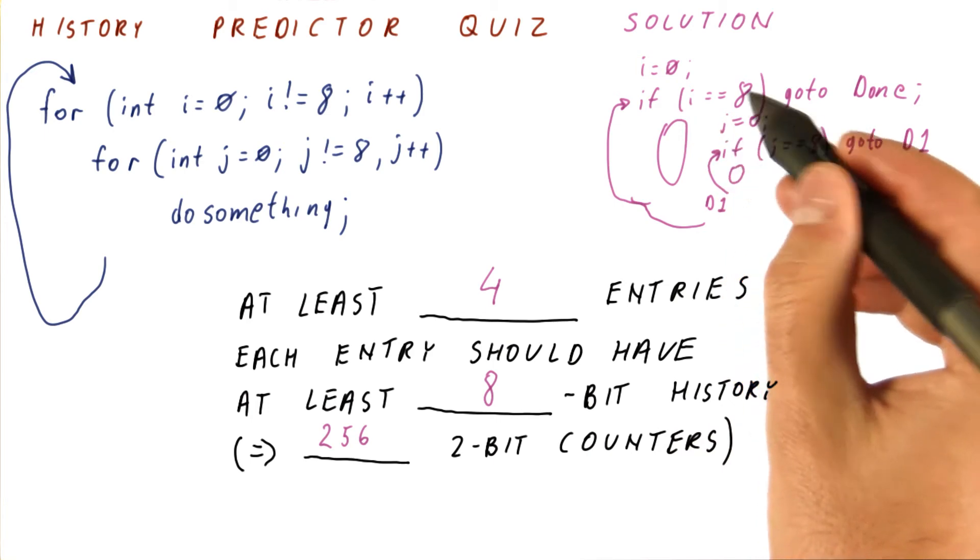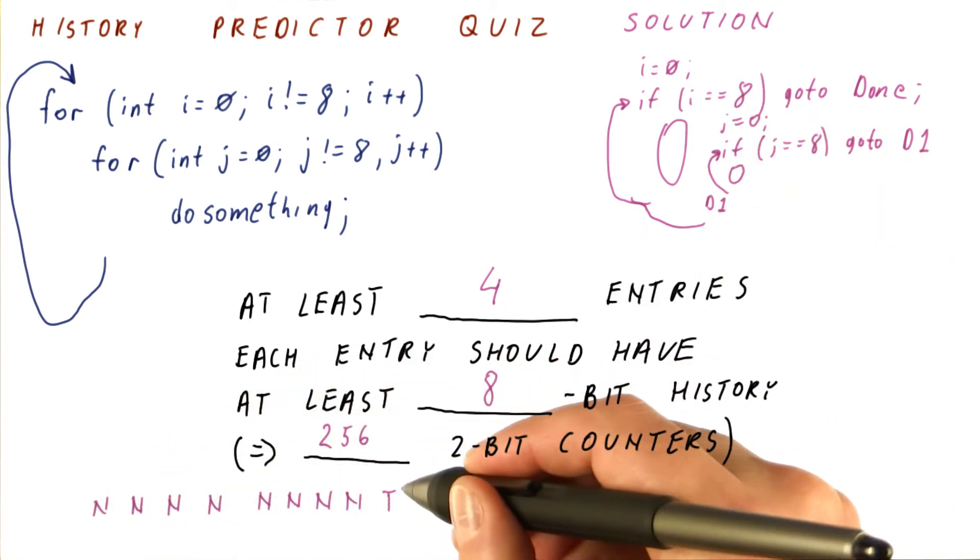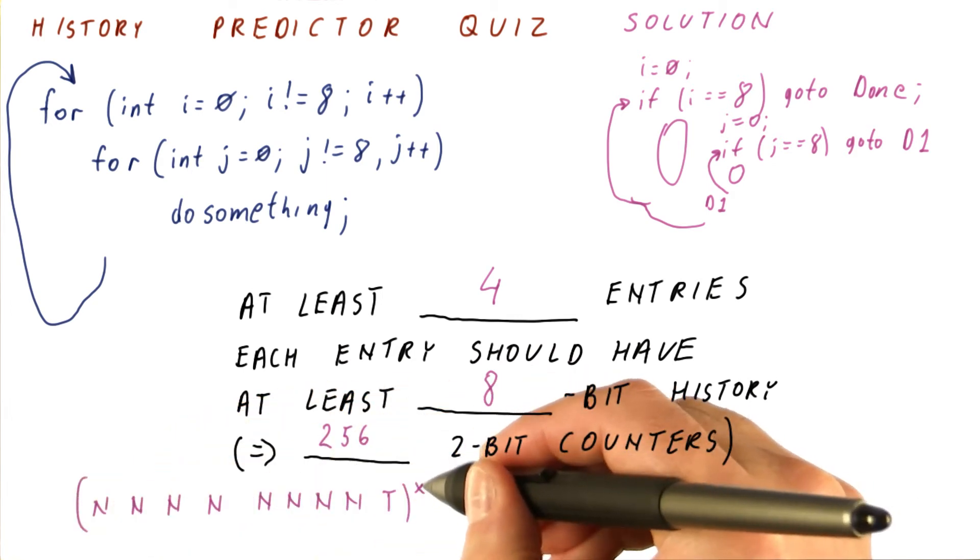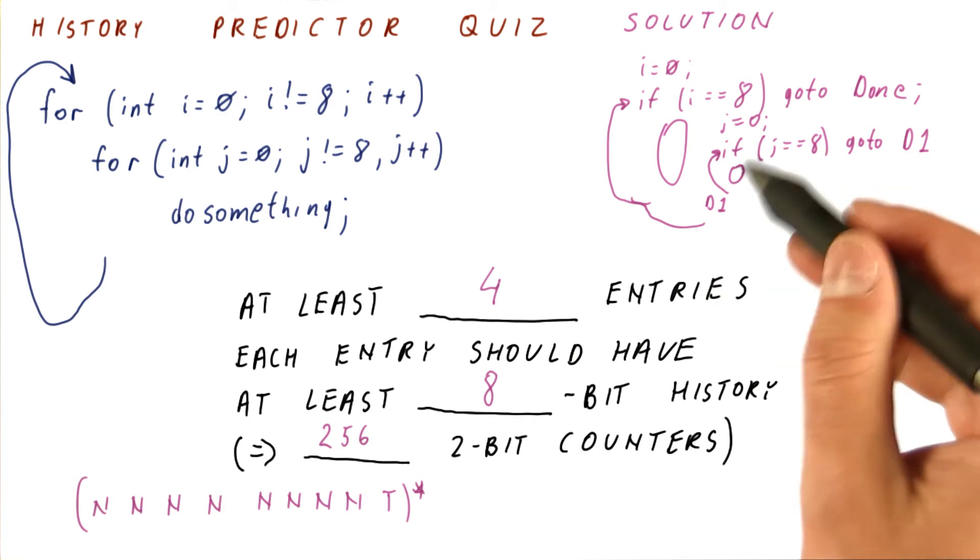Now, what is the pattern of this branch here? It really is eight times it's not taken, followed by a taken, and that repeats. The inner branch does exactly the same thing, except it does it many more times.